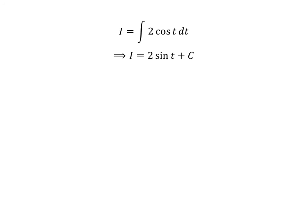We know the integral of cosine t is sine t, so I equals 2 sine t plus C. C is the arbitrary constant of indefinite integral. Never forget to add this constant.